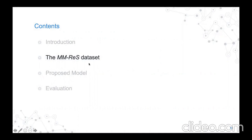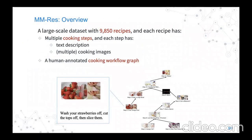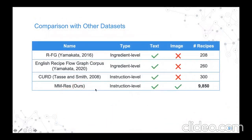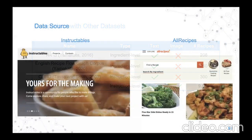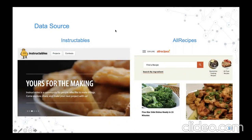In the following, I will introduce how we construct this dataset. In general, MM-RES is a very large dataset with more than 9,000 recipes. Each recipe has multiple cooking steps, and each cooking step has both text description and multiple cooking images. More importantly, for each cooking recipe we have a human-annotated cooking workflow graph. In this table we compare our dataset with others for cooking workflow construction — our dataset has more than 9,000 recipes while others only have a few hundred, and only our dataset has multi-modal information with both text instructions and cooking images. We collect the recipes from two data sources: Instructables and AllRecipes, both very famous cooking sharing websites.